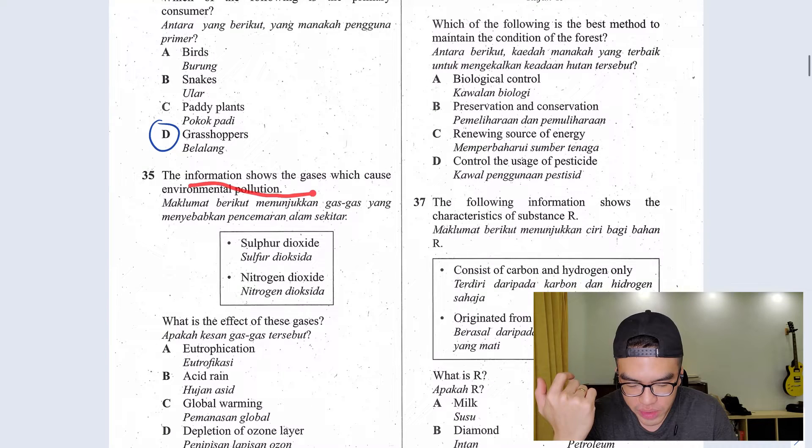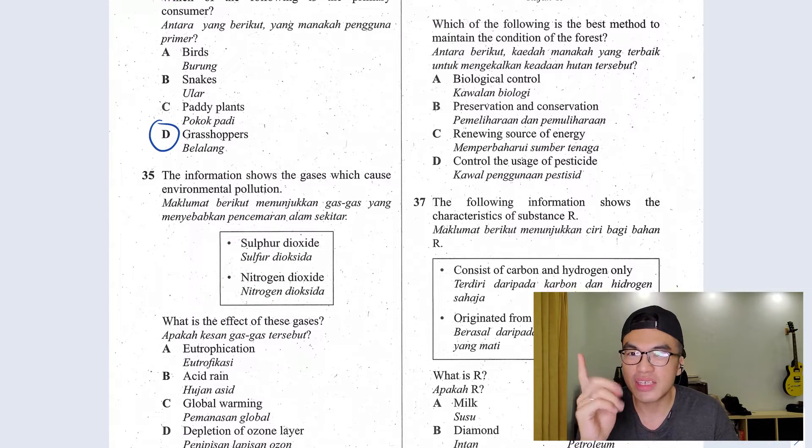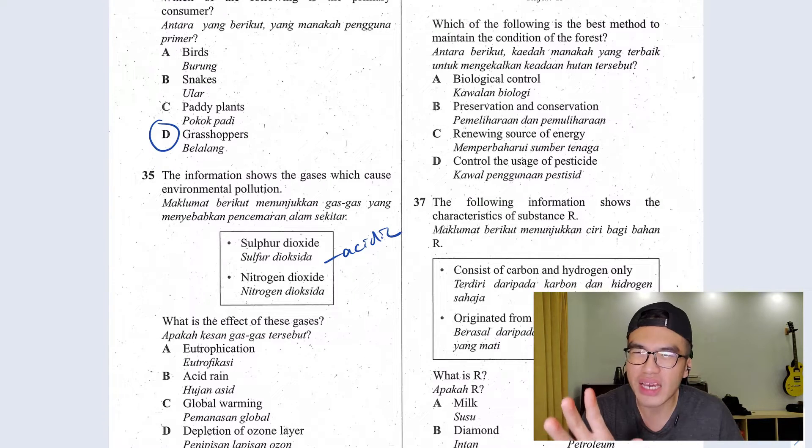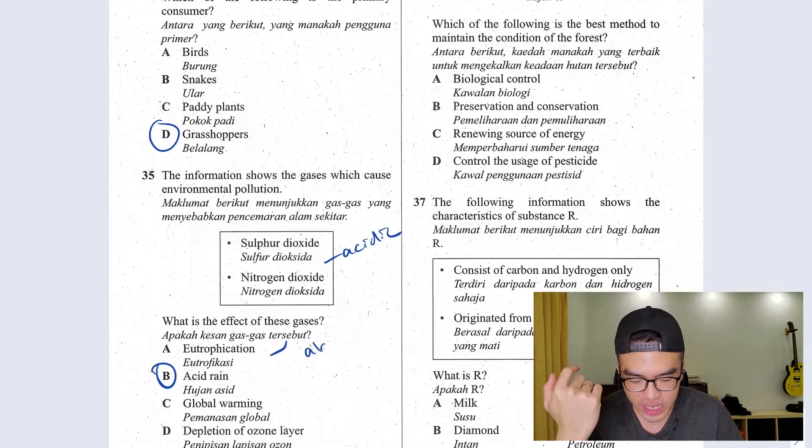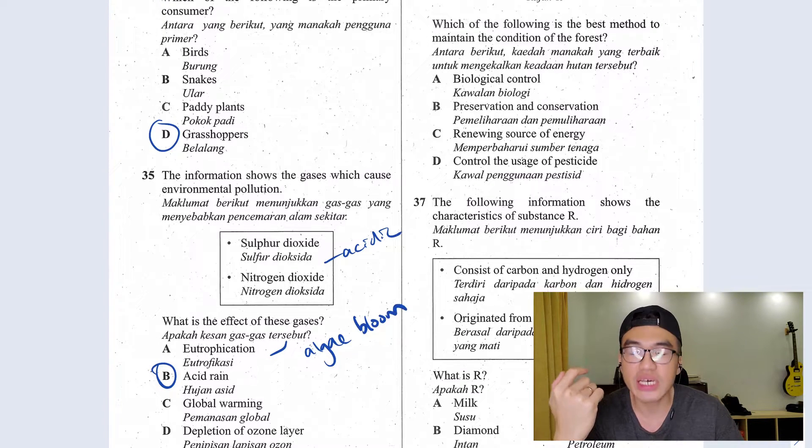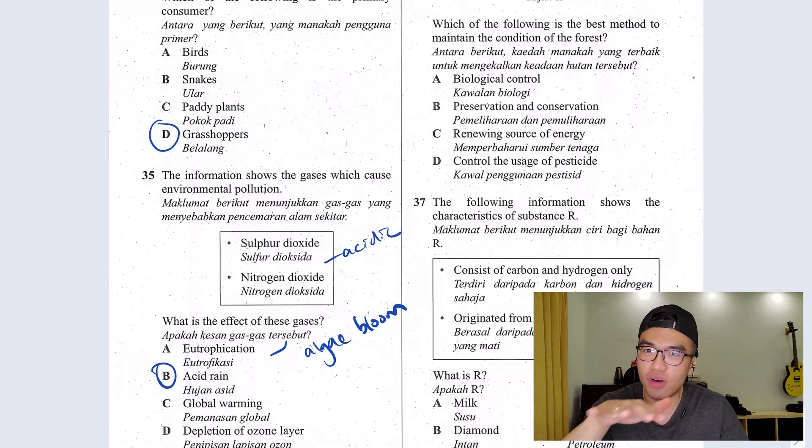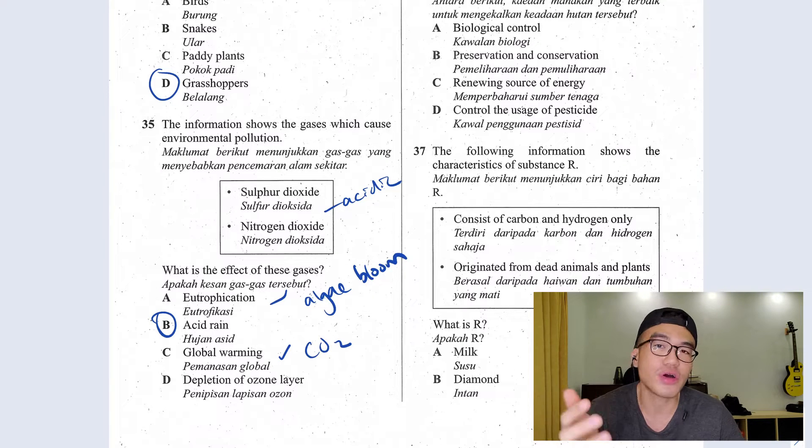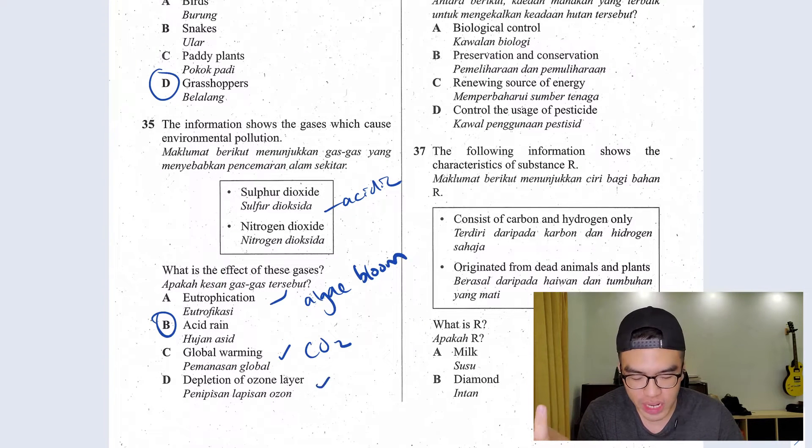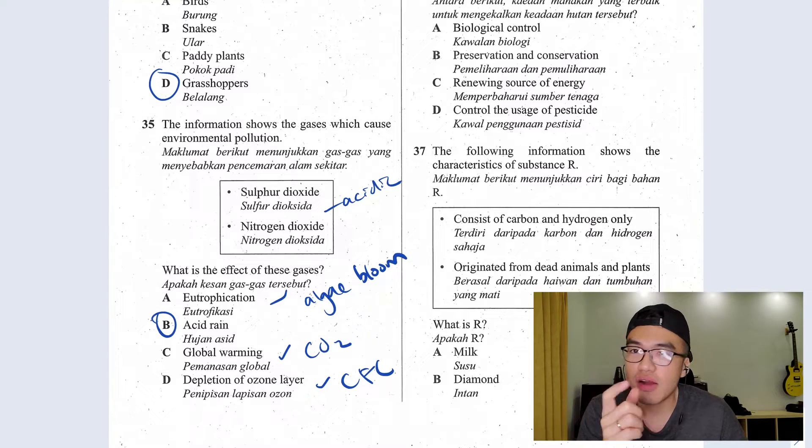Question 35, the information shows the gases which cause environmental pollution. When you see sulfur and nitrogen, this is for sure your acidic gases. When you have acidic gases dissolving in the environment, for sure you would have acid rain. So what is eutrophication? Eutrophication is the algae bloom. When you flush too much of fertilizer into ponds or rivers, when algae start growing on the surface, it causes the usage of oxygen in the water, causes the death of aquatic animals. Global warming, this is actually caused by CO2, which we call greenhouse gases. Depletion of ozone layer is usually caused by your CFC. They used to use it in air conditioners, aerosol spray cans.